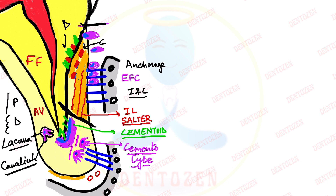The lacuna is the space where the cell lives; canaliculi are the spaces where its processes live. This cell embedded inside the cementum — with its lacuna and canaliculi — is given the special name cementocyte. As cementum keeps forming in the apical region, contributing to root lengthening, the deeper cementocytes become far from PDL nutrition and die, leaving empty lacunae in the deeper layers. This type of cementum — with cells embedded inside, lacunae, and canaliculi — resembles bone with its osteocytes, and is formed by cementoblasts from the dental follicle.